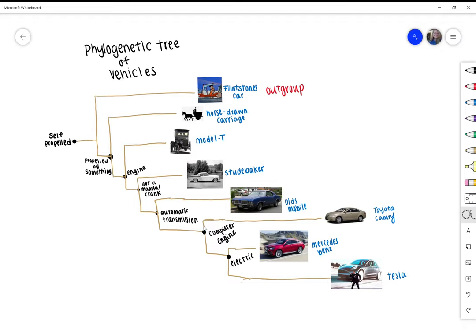This is considered a rooted tree because of the inclusion of an outgroup, shown here as the Flintstones car. There is also a use of cladogenesis, which is the splitting of a single lineage into two branches.